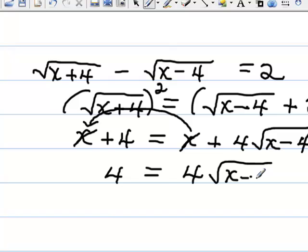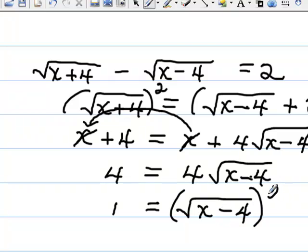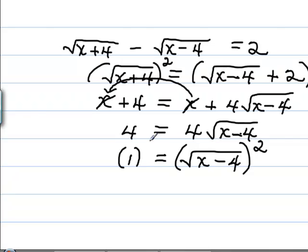I'm still trying to isolate the radical. So just like in any other algebra problem, I can divide both sides by 4. So I get 1 equals the square root of x minus 4. Now I'm going to square both sides just like we did in the other problems, and I get 1 equals x minus 4.